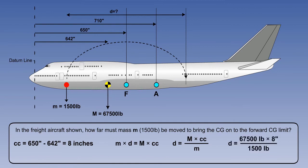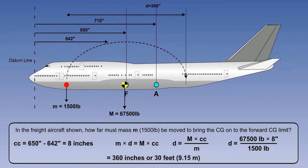Enter the known data for aeroplane mass, M, change of centre of gravity, CC, and mass to be moved, m. Having entered the data, we can now solve for the distance the mass has to move, D, to bring the centre of gravity onto the forward limit, which equates to 360 inches.